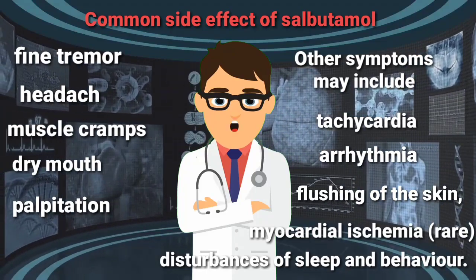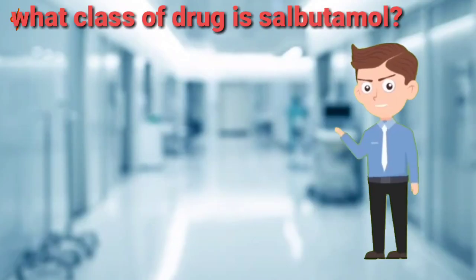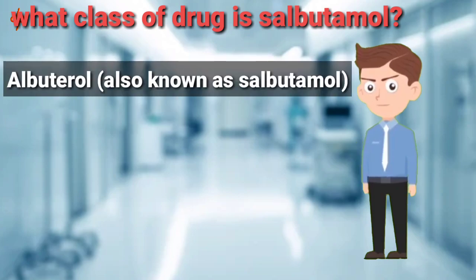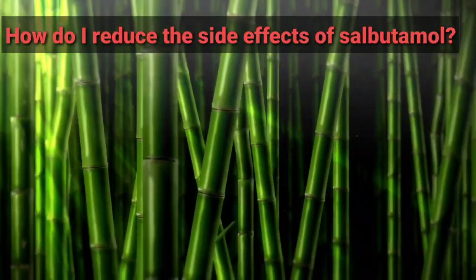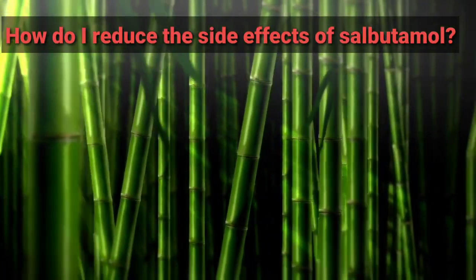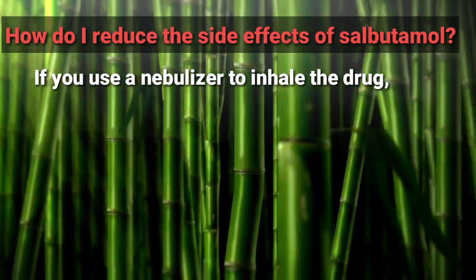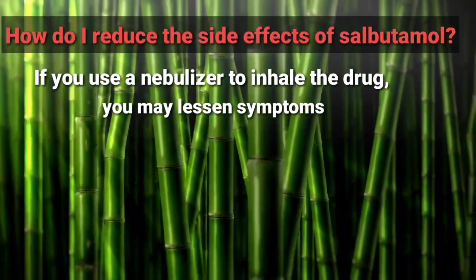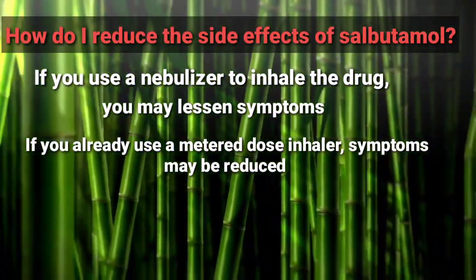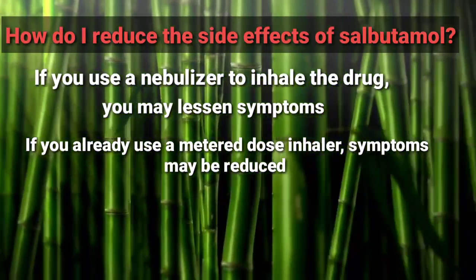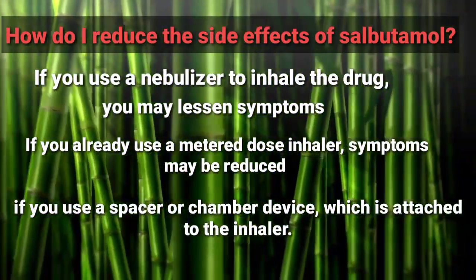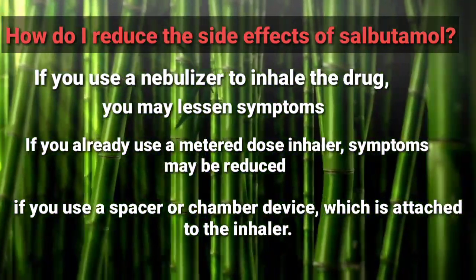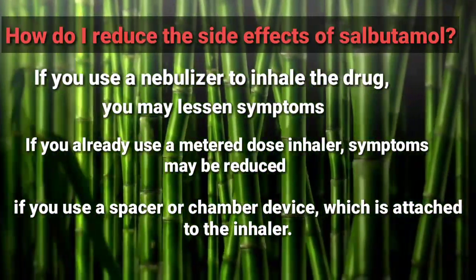The next question was: what class of drug is Salbutamol? Albuterol, known as Salbutamol, belongs to a class of drugs known as bronchodilators. The next question: how can we reduce the side effects of Salbutamol? If you use a nebulizer to inhale the drug, you may lessen symptoms. If you switch to a metered dose inhaler, the symptoms may be reduced. If you use a spacer or chamber device attached to the inhaler, the side effects can also be reduced.